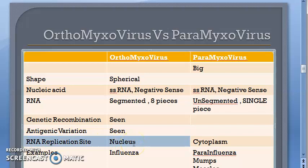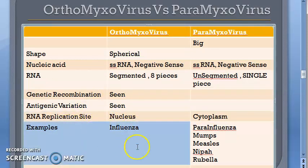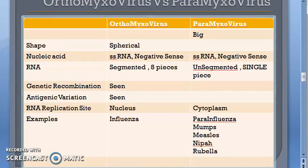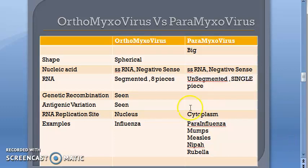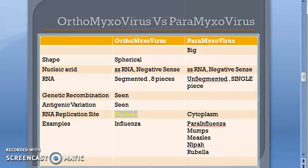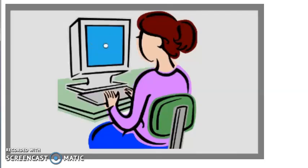Orthomyxovirus has antigenic variation and genetic recombination. The replication of the RNA happens in the nucleus — the site of replication is the nucleus of the host cell. In contrast, paramyxovirus has unsegmented RNA — it is single-stranded and a single piece. Orthomyxovirus replicates in the nucleus.